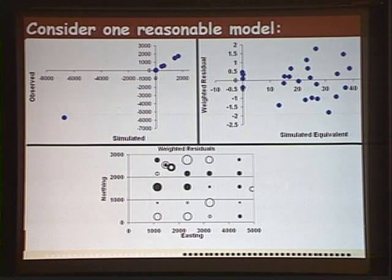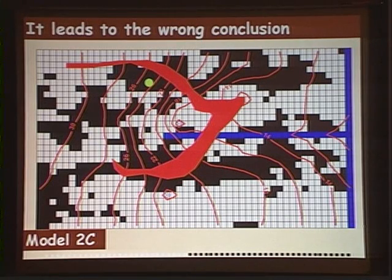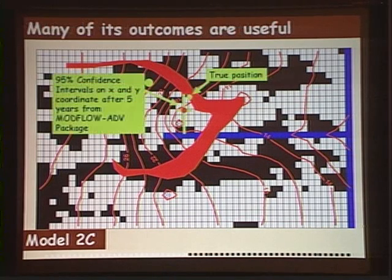This plot should form a narrow uniform band around zero. The data shown here would certainly be acceptable for a field calibration. We also look at weighted residuals in space and time. We want the large and small, positive and negative (shown here in black and white) to be randomly distributed in space. If a person looked at these calibration results, they would say this is certainly an acceptable model. The trouble is, it comes to the wrong conclusion about whether the municipal well is safe from the spill.